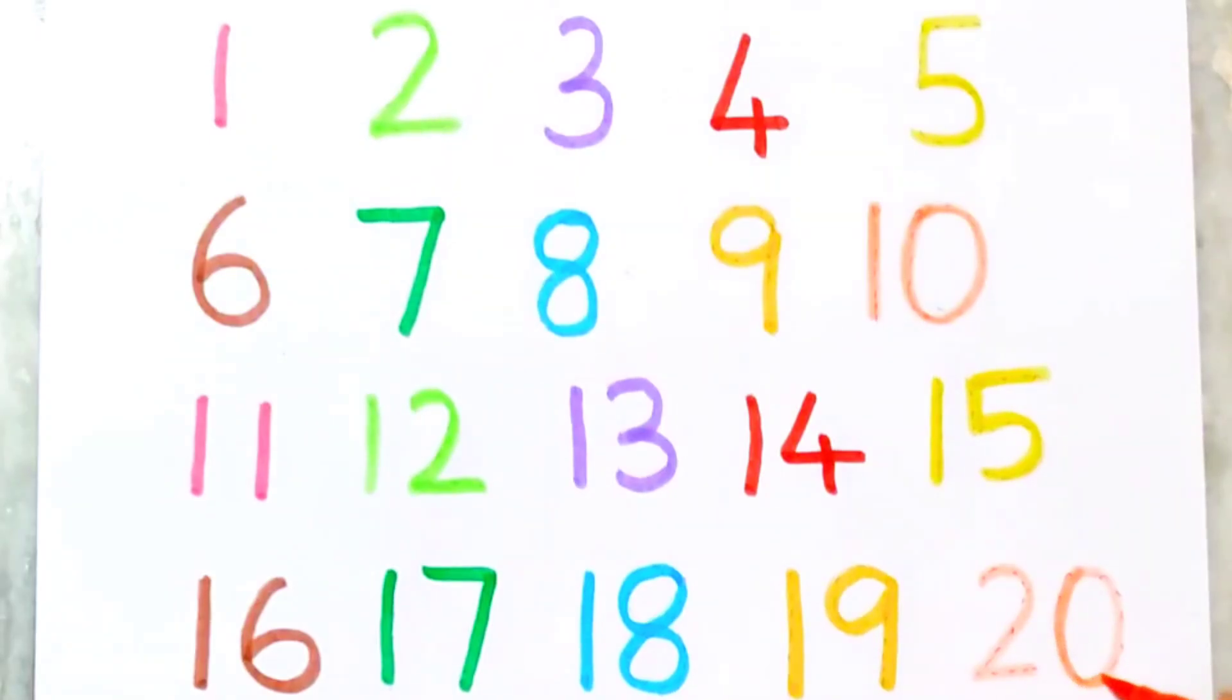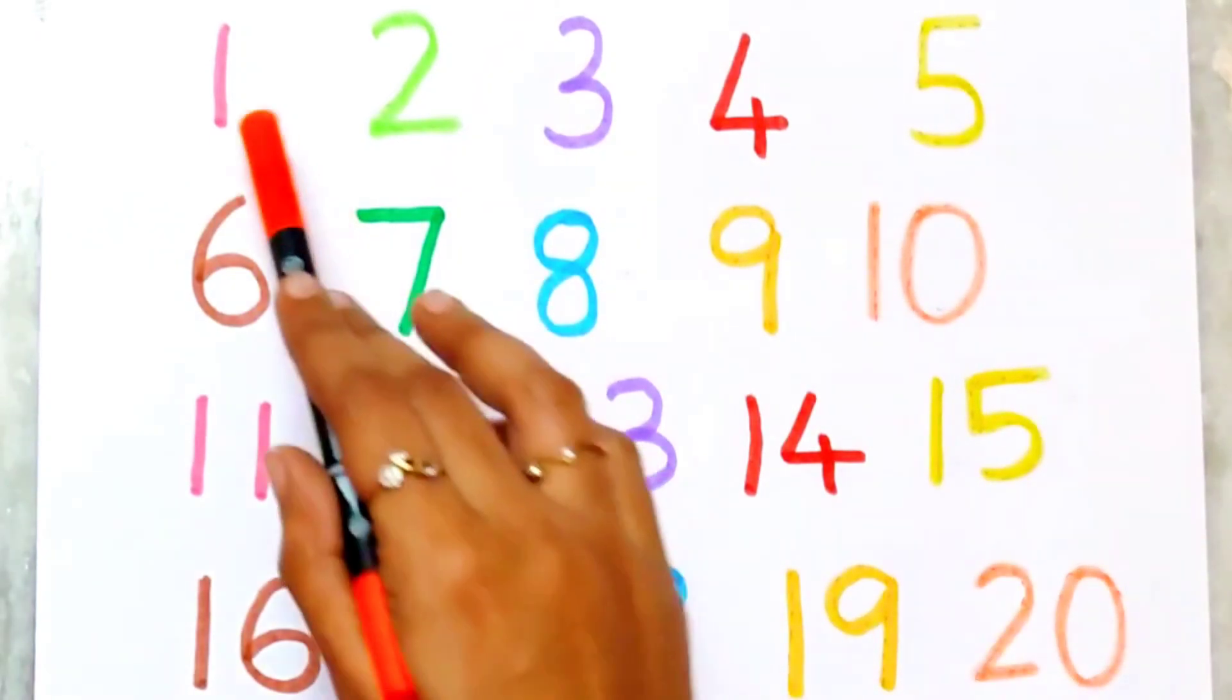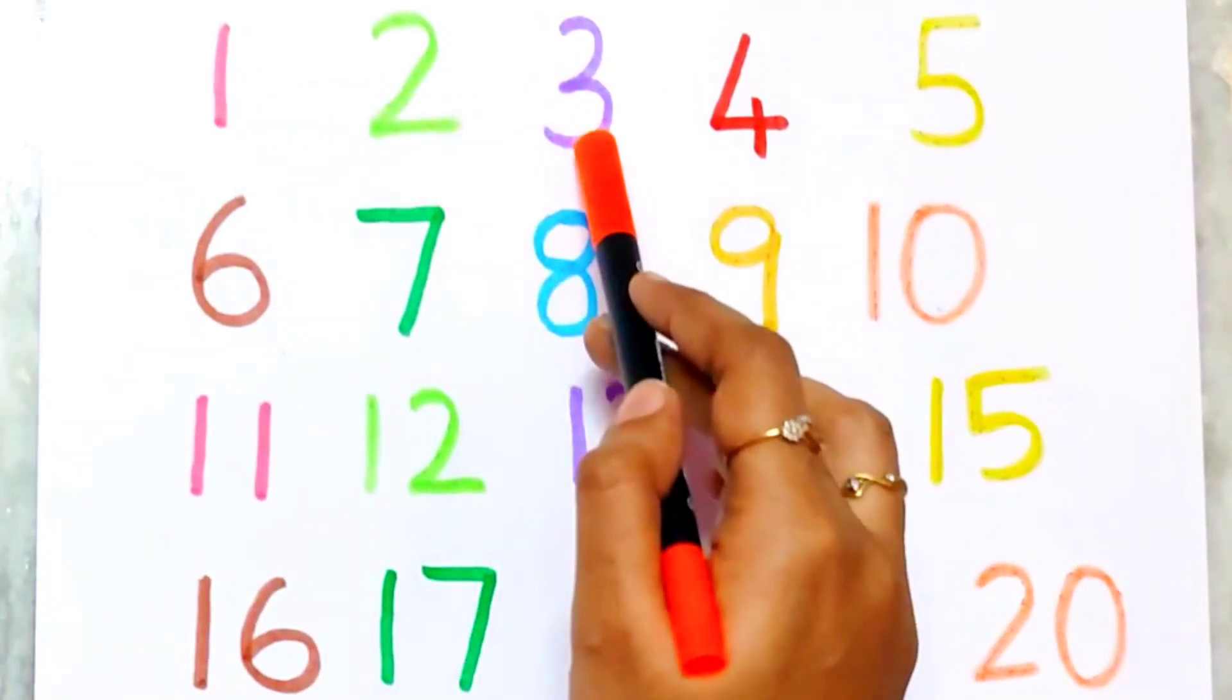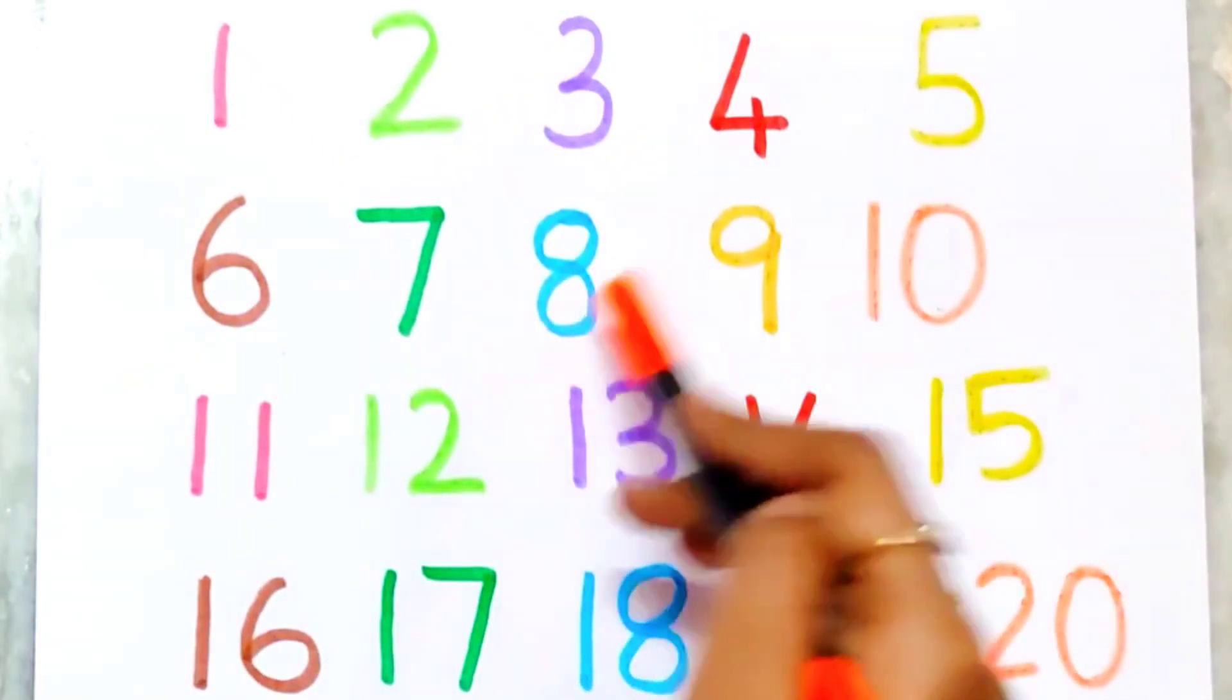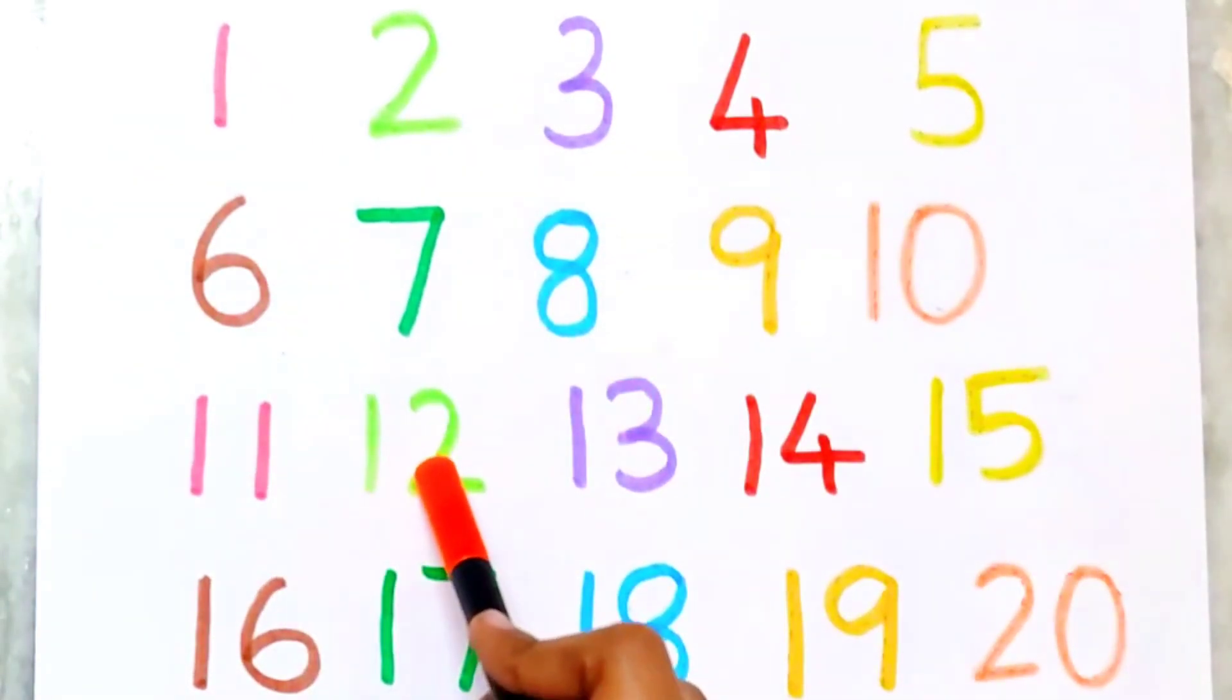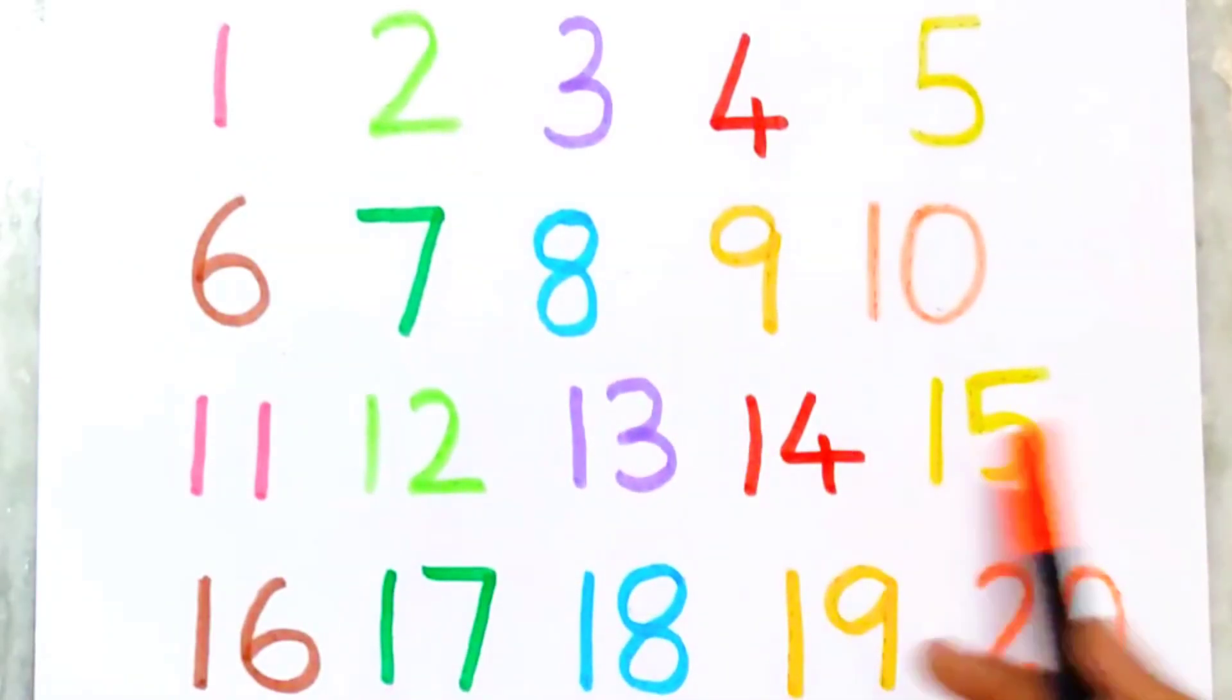20. Let's count. 1, 2, 3, 4, 5, 6, 7, 8, 9, 10, 11, 12, 13, 14, 15, 16, 17, 18, 19, 20.